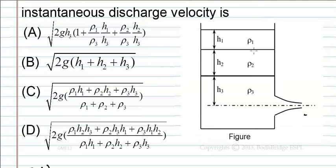A tank contains 3 different liquids of density rho1, rho2, and rho3 of heights h1, h2, and h3 respectively. Now let us apply Bernoulli's equation at exit.